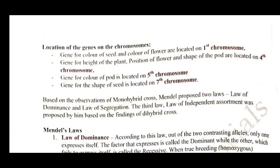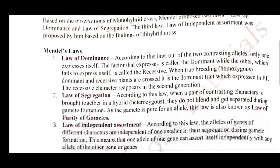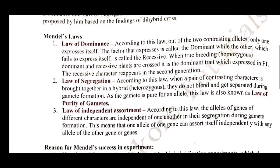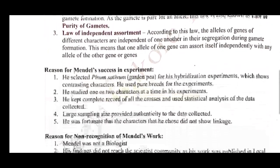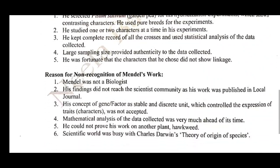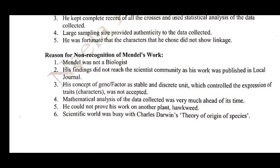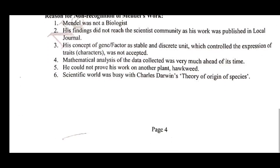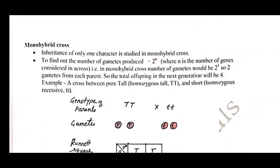Page number four gives a description of the location of genes on chromosomes. The most important topic here is Mendel's three laws — the Law of Dominance, Segregation, and Independent Assortment. The reasons for Mendel's success in his experiments are also given, as well as the reasons why his work was not recognized in his time.